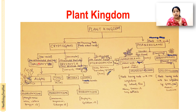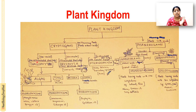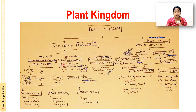Thallophyta are non-vascular — there is no well-defined vascular system, no xylem or phloem — and the plant body is also non-differentiated. Bryophyta are also non-vascular; there is no well-defined vascular system in bryophyta, but they have a differentiated plant body. Pteridophyta have both a differentiated plant body and are vascular — they have xylem and phloem.